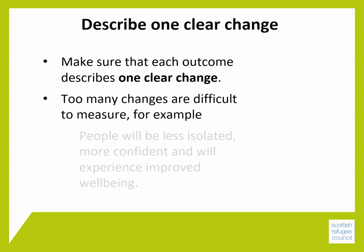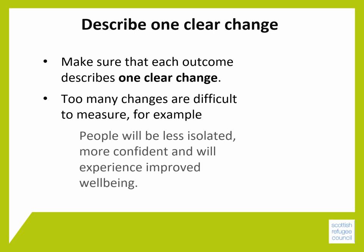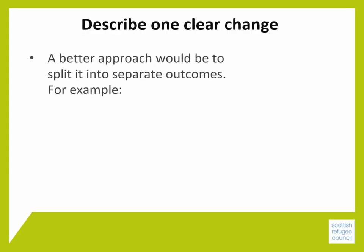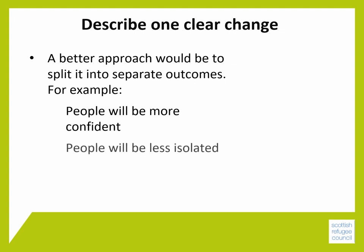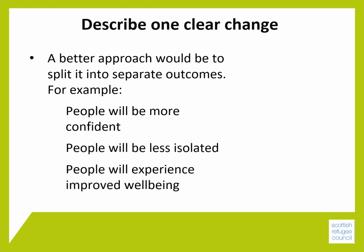For example, 'people will be less isolated, more confident, and will experience improved well-being' has too many parts, making it less clear and more difficult to measure. A better approach would be to split it into separate outcomes: 'people will be more confident,' 'people will be less isolated,' or 'people will experience improved well-being.'